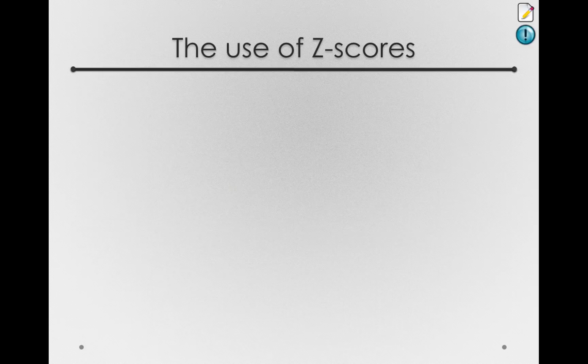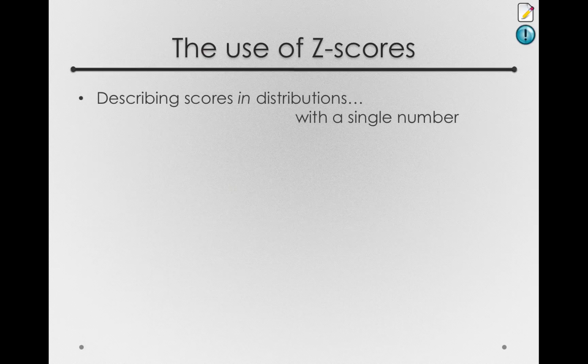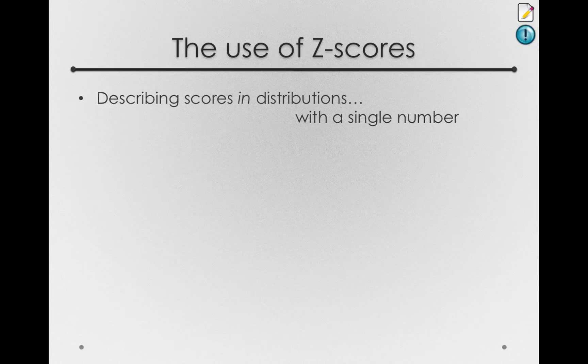Now, z-scores have many uses for us. First, they describe scores in distributions with a single number. Z-scores give us a relative score and a distribution-independent score that we can compare among any distribution we want.